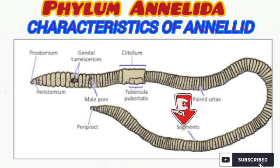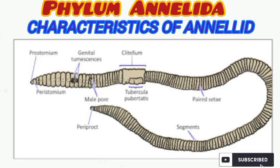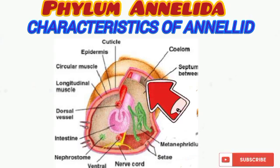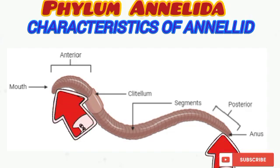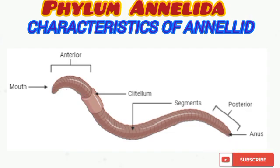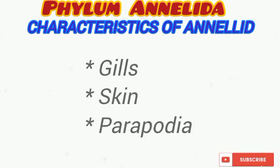The body of annelids is segmented and bilaterally symmetrical, meaning it can be cut into two equal halves that are mirror images of each other through only one plane. They possess a true body cavity regarded as the coelom, and their body possesses a hydrostatic skeleton. Their digestive system is complete — as seen in the diagram, they have both a mouth and an anus, possessing two openings to the external environment. Gaseous exchange in annelids occurs through gills, the skin, or the parapodia.